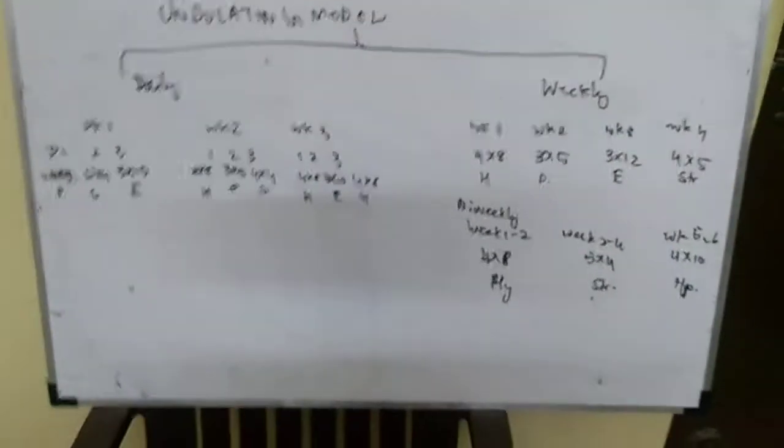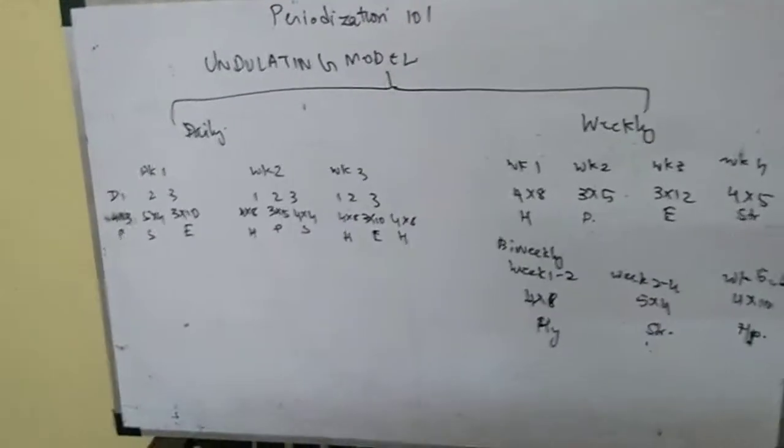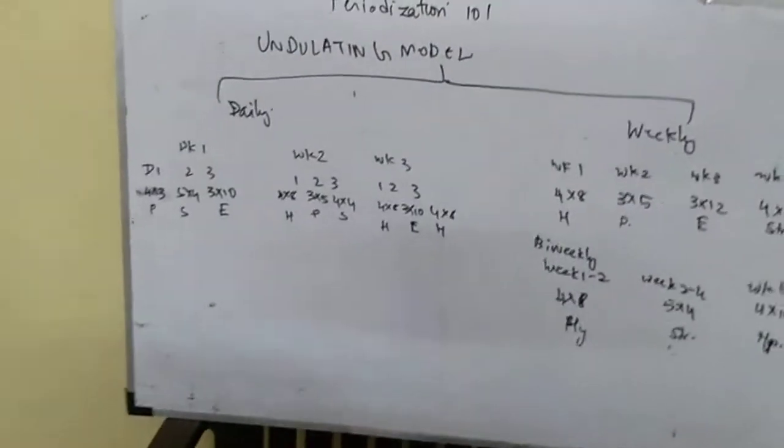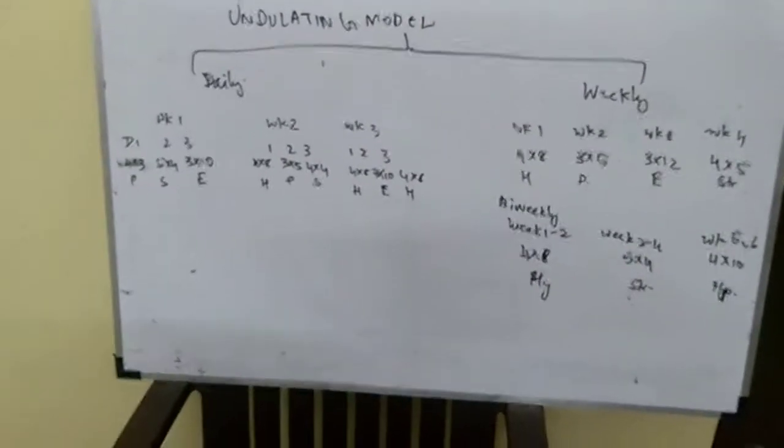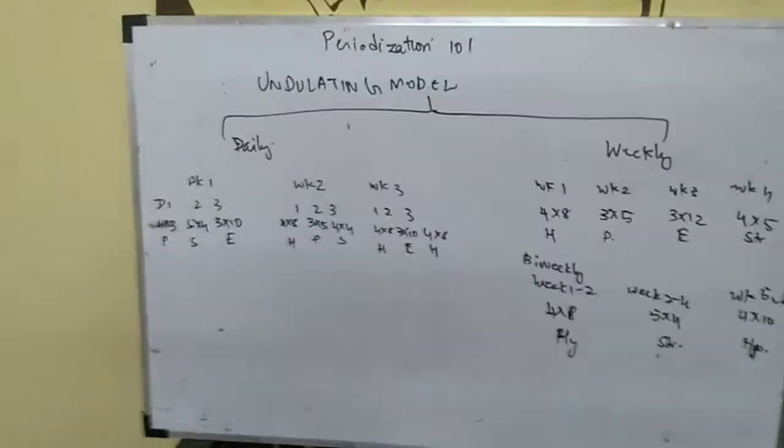The second model we're going to discuss is the undulating periodization model. From the term undulating, we know that the sets and reps or the scheme which we are putting in the phase will be changing. That's the meaning of undulation.